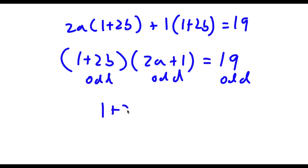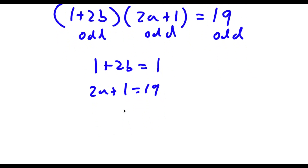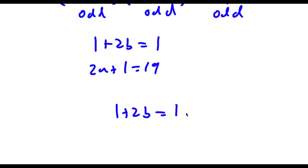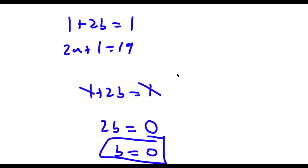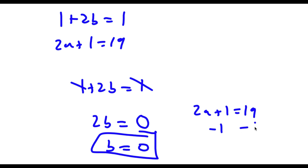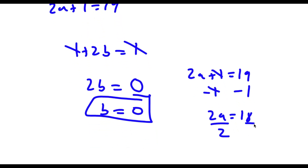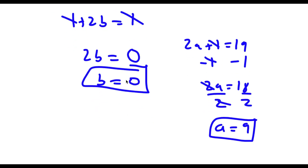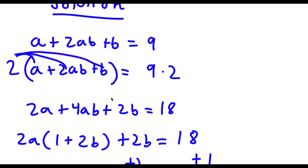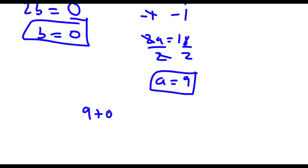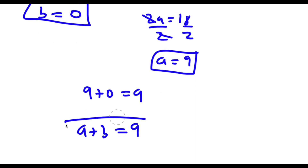So if I set (1 + 2b) equal to 1, then (2a + 1) has to equal 19, because 1 times 19 is equal to 19. For 1 + 2b = 1, I subtract 1 from both sides to get 2b = 0, meaning b = 0. For 2a + 1 = 19, I subtract 1 from both sides to get 2a = 18, then divide by 2 to get a = 9. So b = 0 and a = 9, meaning a + b = 9. That's my answer.